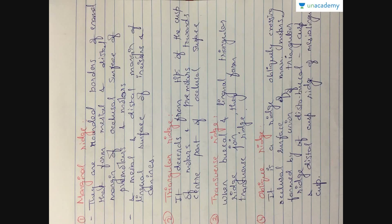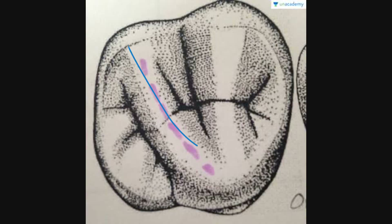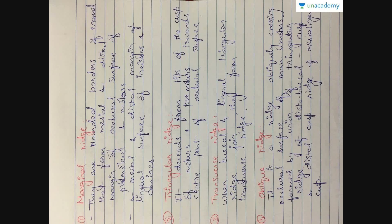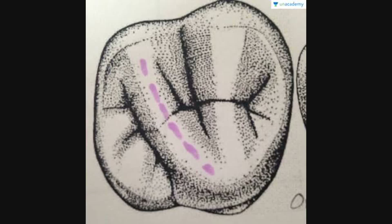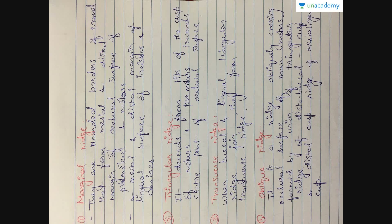The oblique ridge is the ridge which obliquely crosses the occlusal surface of maxillary molars, formed by the union of the triangular ridge of the distobuccal cusp and distal cusp ridge and the mesiolingual cusp. This is your oblique ridge, starting from the distobuccal cusp and distal cusp ridge of the mesiolingual cusp. These ridges are very narrow, and when you do the wax carving you will be able to understand more easily.